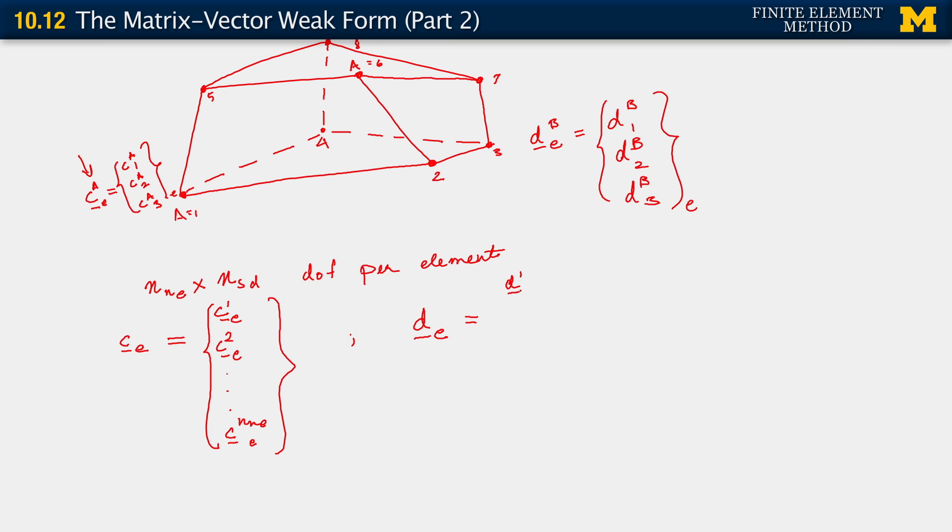So it's D_1E, and at that node 1, we have D_1 in the 1 direction, D_1 in the 2 direction, D_3 in the 3 direction, so the 3 degrees of freedom at that node. So we have D_1E, D_2E, and so on all the way up to D_NNE, element E.